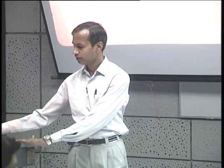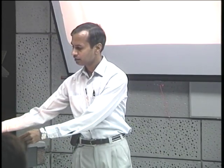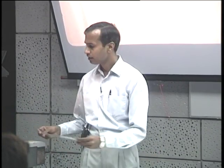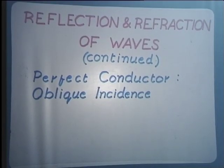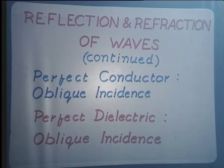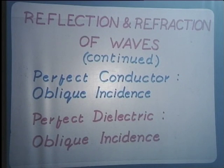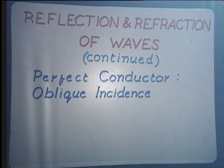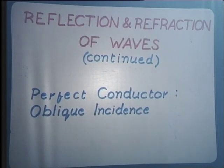Welcome to the 19th lecture in the course Engineering Electromagnetics. We initiated our discussion on the topic of reflection and refraction of plane waves and continue with this discussion today. The first topic we take up today will be the perfect conductor with oblique incidence of a plane wave, followed by the case of a perfect dielectric with a plane wave impinging on it at oblique incidence. We start with the first topic: perfect conductor oblique incidence.